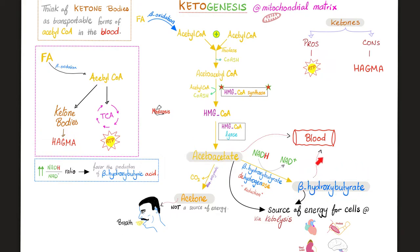The three ketone bodies again: acetone, acetoacetic acid, beta-hydroxybutyric acid. Acetoacetate and beta-hydroxybutyrate can provide you with energy. Acetone does not provide you with energy, but it provides your doctor with a clue — it has a fruity breath odor that is very characteristic and tells your doctor maybe this patient has ketosis, maybe we need to run some tests, maybe this patient is having diabetic ketoacidosis or has type 1 diabetes and doesn't know it. Acetone is clinically significant, not physiologically significant.